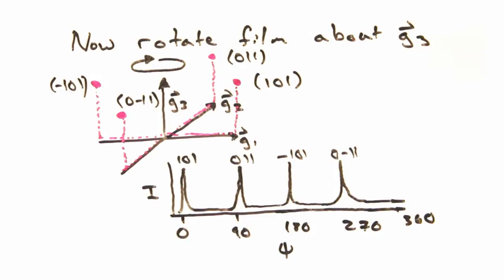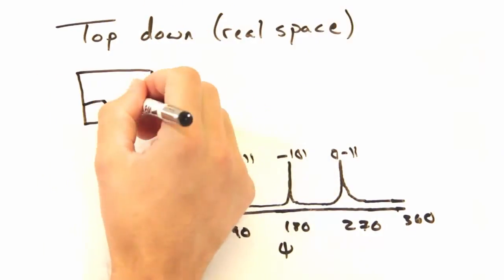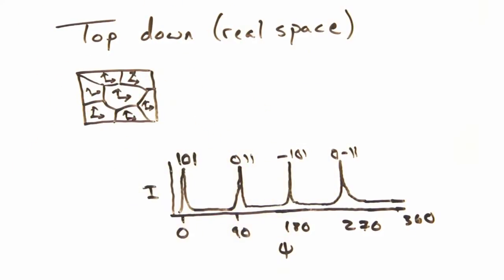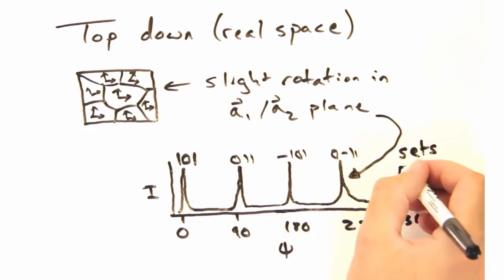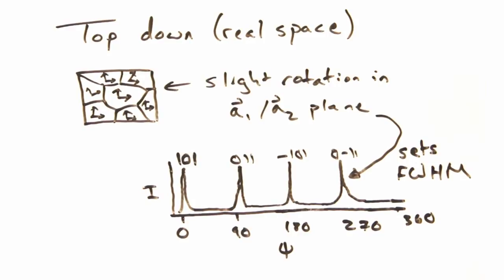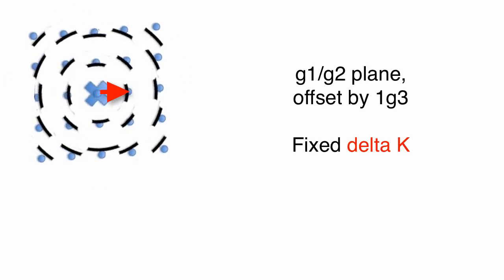So to bring this back to thin films, imagine looking down on the sample so that the G vector is into the board. Crystals that have different in-plane orientations will result in arcs in reciprocal space. Similar to the ones we saw for the omega rocking curve? Yeah.